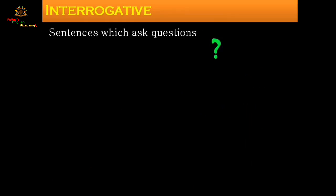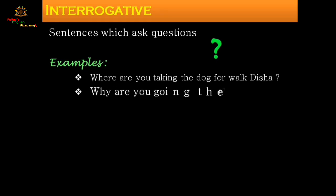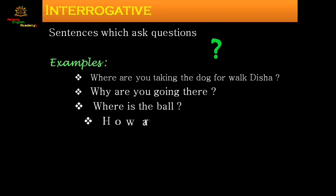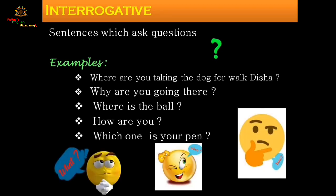Interrogative sentences are questions. Simply put — sentences which ask questions are interrogative sentences. They always end with a question mark. For example: 'Where are you taking the dog for a walk, Disha?' — someone is asking Disha where she is taking her dog for a walk.